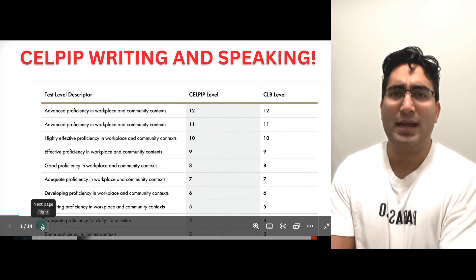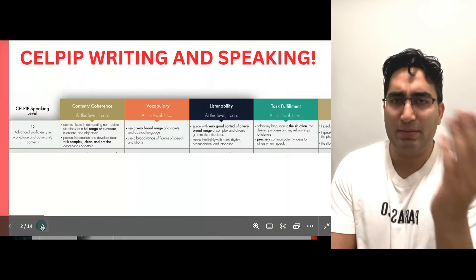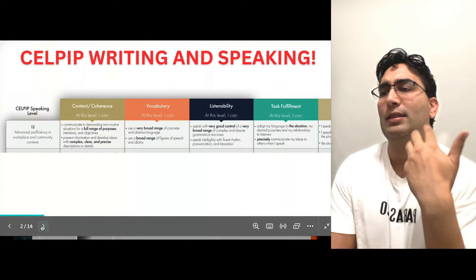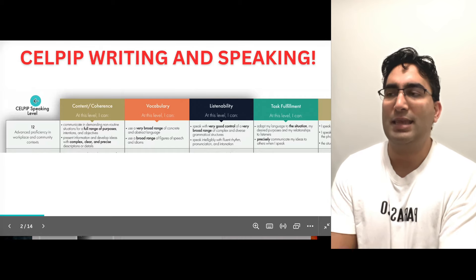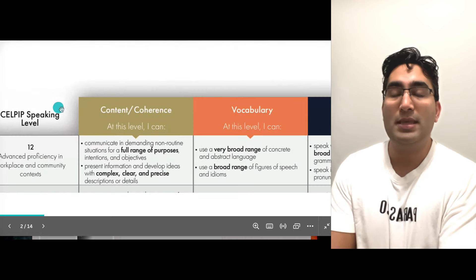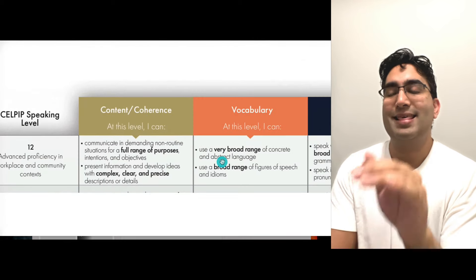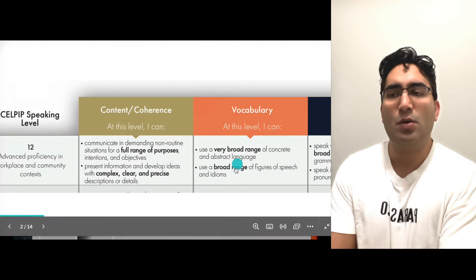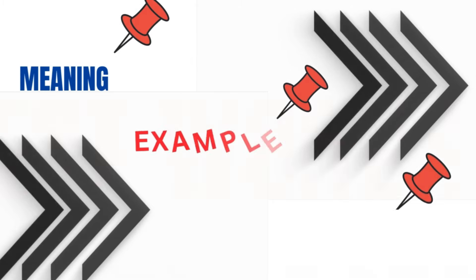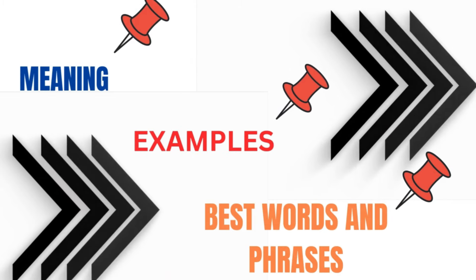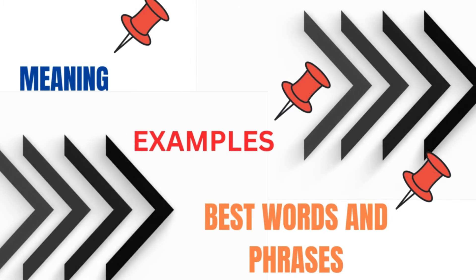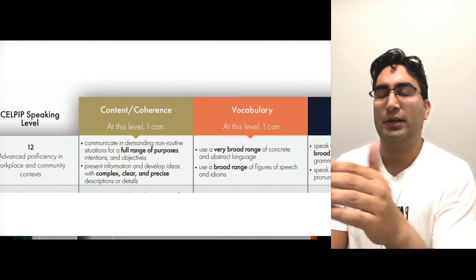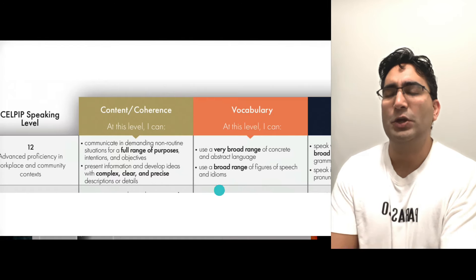Now, how do we practically demonstrate that? The best way is to look at the actual examiner marking scheme for speaking first. Then we'll look at what these terms mean, example sentences, the best words and phrases, and we'll also look at the writing part and the marking scheme for that too.